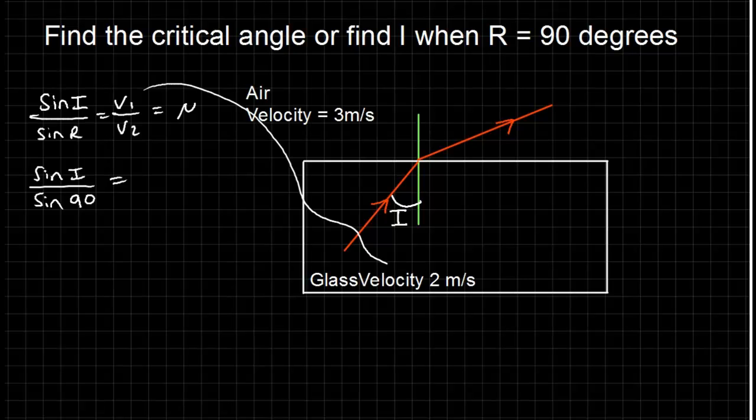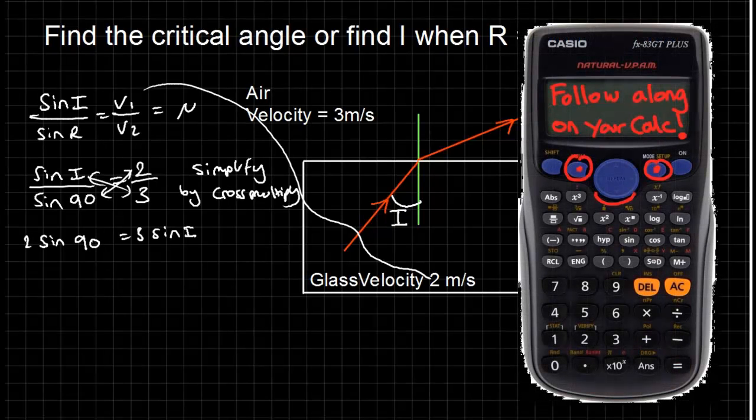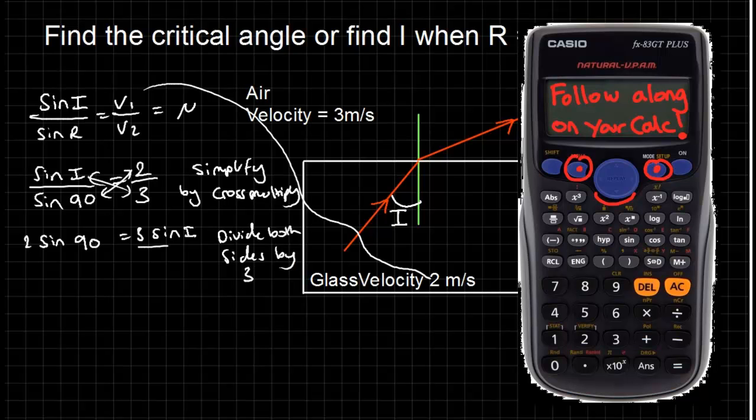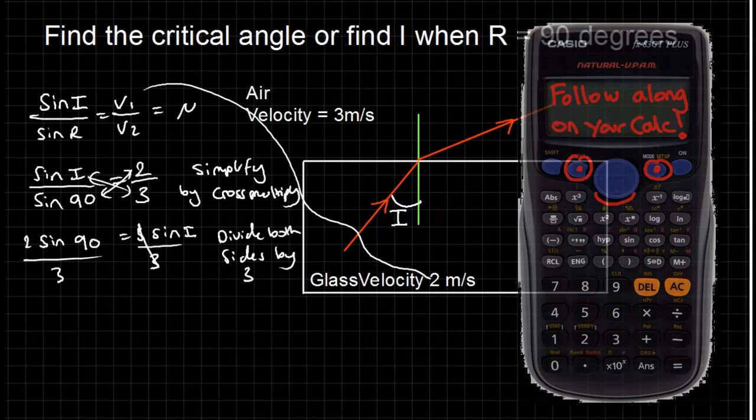Here we have the velocities, we have the angle of refraction, it's going to be 90 degrees, and we're just looking for i. As I simplify the equation, I'm just cross-multiplying to get it all on one line, then dividing both sides by 3 to get rid of the 3 on the right-hand side. Now, calculating 2 sine 90 divided by 3 gives me 0.66.